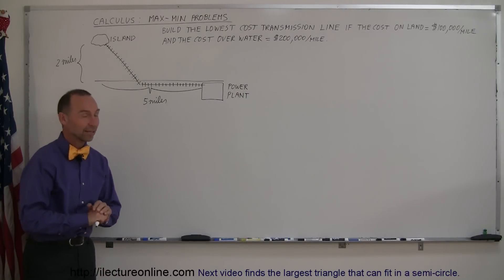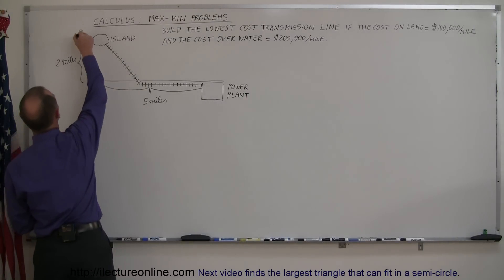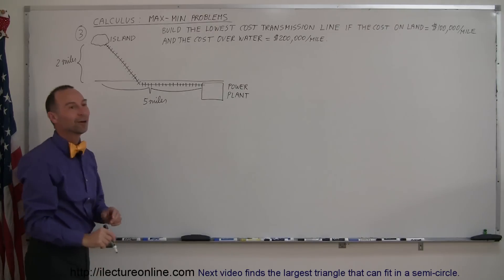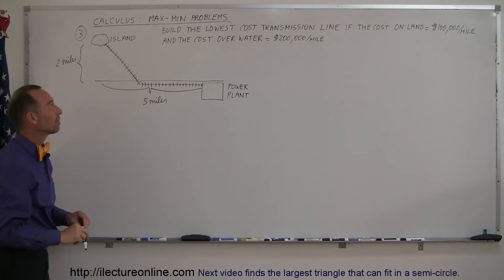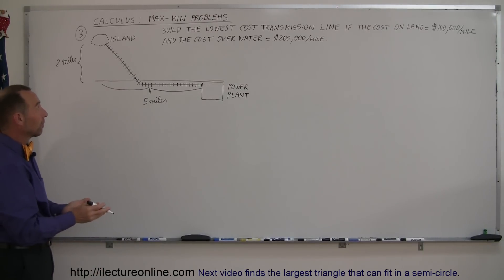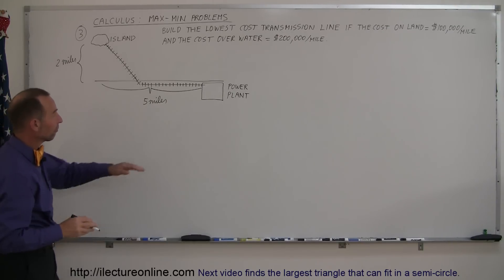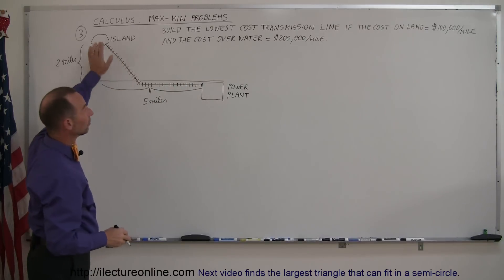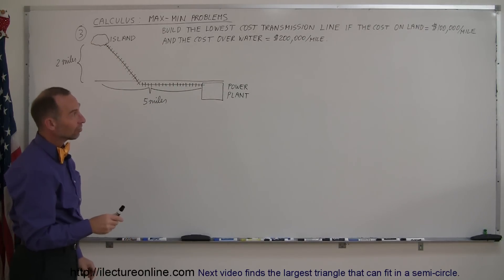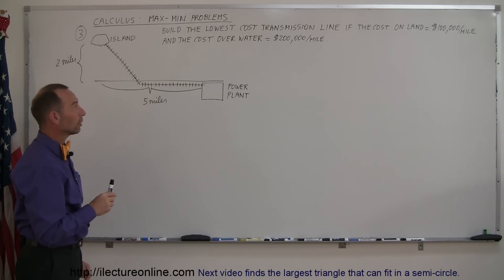Welcome to Electron Online. Here's example number three of max/min problems in calculus. It's a very interesting and practical example. They ask you to build the lowest cost transmission line from the power plant to the island, where the cost on land is $100,000 per mile and the cost over water is $200,000 per mile.